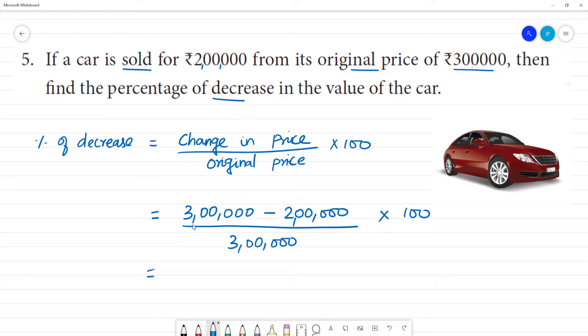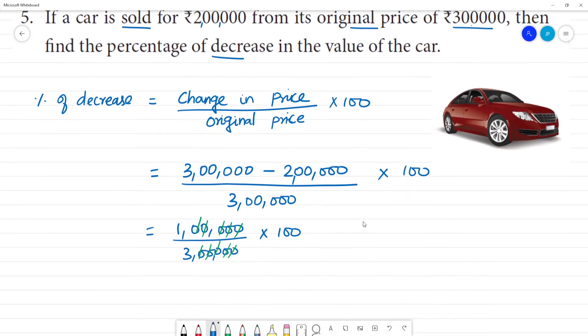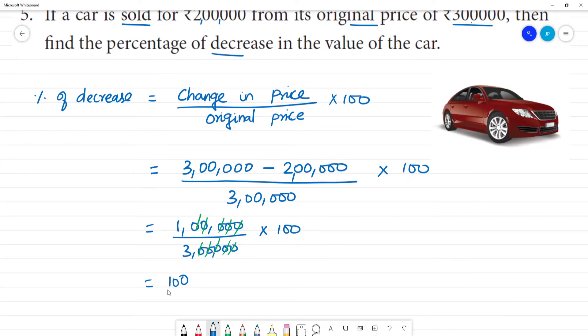So 3 minus 2 is 1 lakh, divided by 3 lakhs multiplied by 100. This gives us 100 by 3, which equals 33 and 1 by 3 percentage decrease.